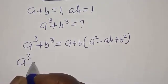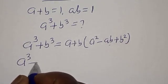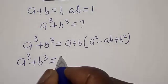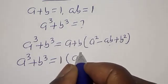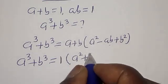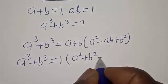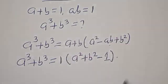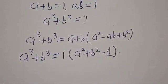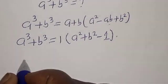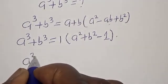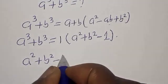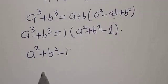So a raised to power 3 plus b raised to power 3 is equal to 1 times a squared plus b squared minus ab, and ab is 1. Multiplying out by 1, we have a squared plus b squared minus 1.